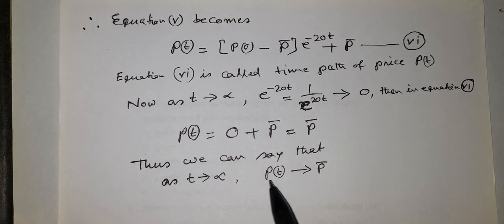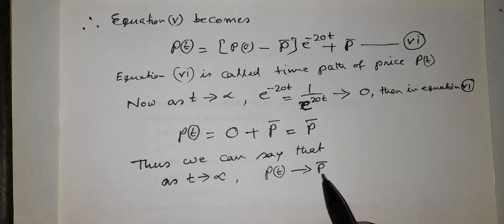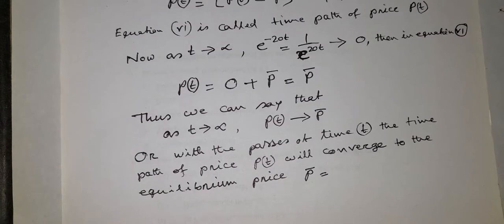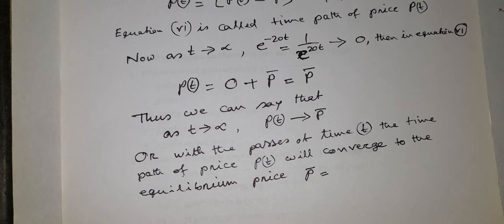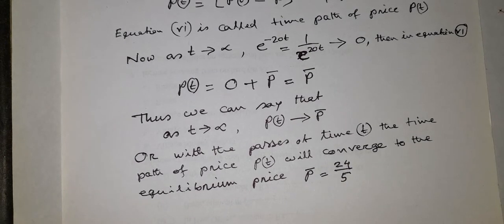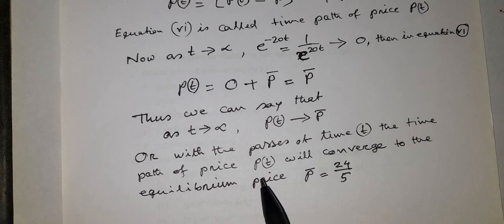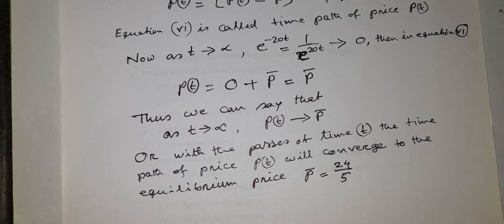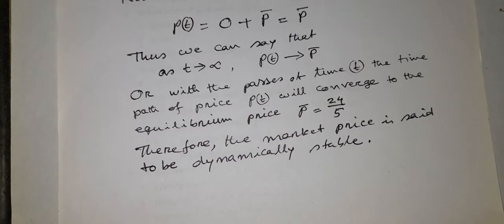Thus, as t → ∞, the time path of price p(t) converges to the equilibrium price p̄ = 24/5. Since the current price p(t) converges to the equilibrium price p̄ with the passage of time, the market price is said to be dynamically stable. Therefore, in this market model, the market price is dynamically stable.